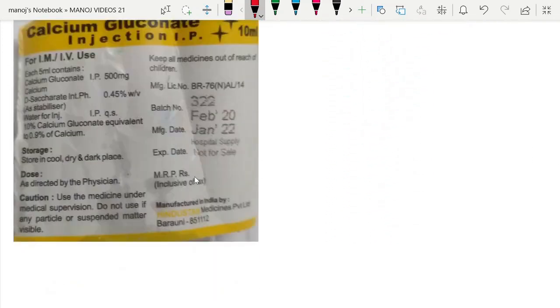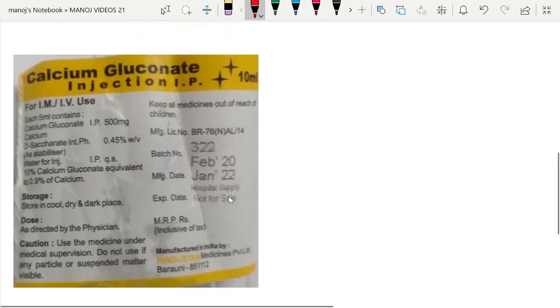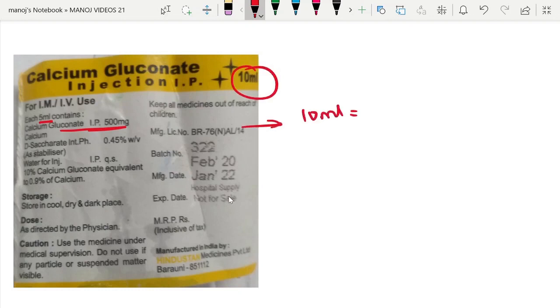This is the label of calcium gluconate available in the ward. You can see they have mentioned 5 ml contains 500 mg. The same vial has 10 ml, which is 10%, meaning it contains 1 gram (because 10 grams in 100 ml).